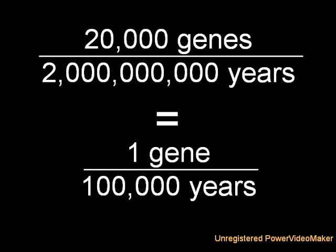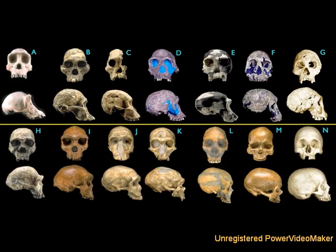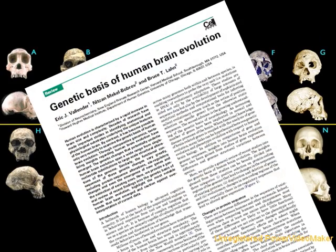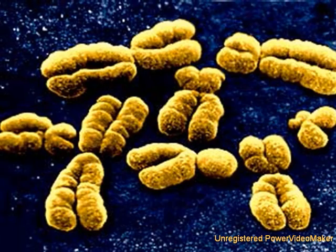That would be only one new gene since modern humans first evolved. And we already know of many novel genes that have evolved since humans and chimps diverged roughly 6 million years ago. But where did these genes come from? What is the origin of genes?